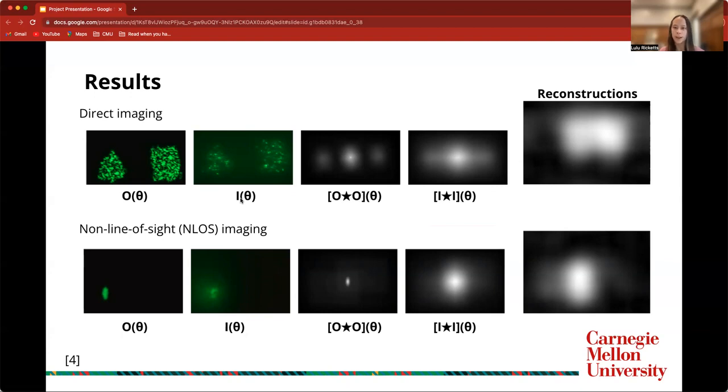For the non-line of sight case, the autocorrelation of the object is an oval shape and the autocorrelation of the image follows the same kind of shape as well, where it's longer in the vertical direction. The reconstruction is able to retrieve this oval shape, although a little bit noisily, and it is located in approximately the correct location on the image.